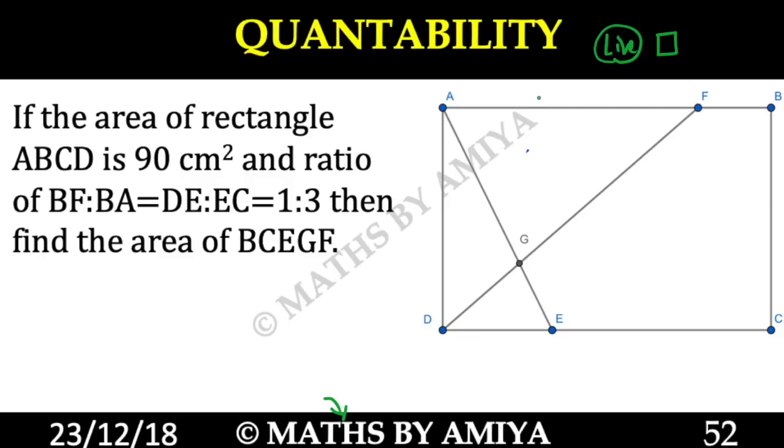Let's start solving this question. Now, here it is given BF is 1, BA is 3. So BF is 1, BA is 1:3. So we can say this one is 1, total is 3, so this one is 2.